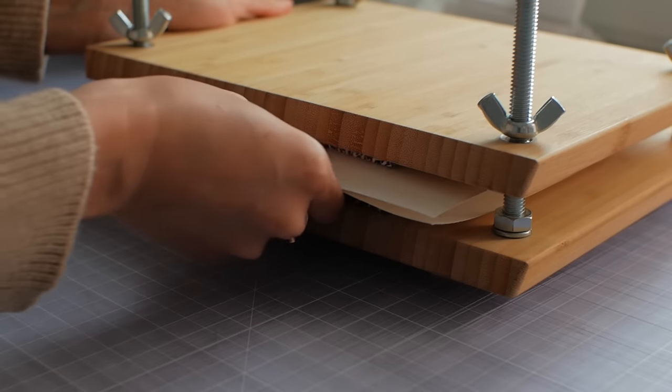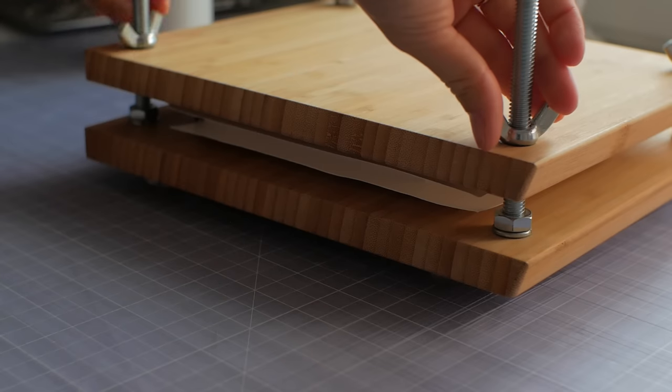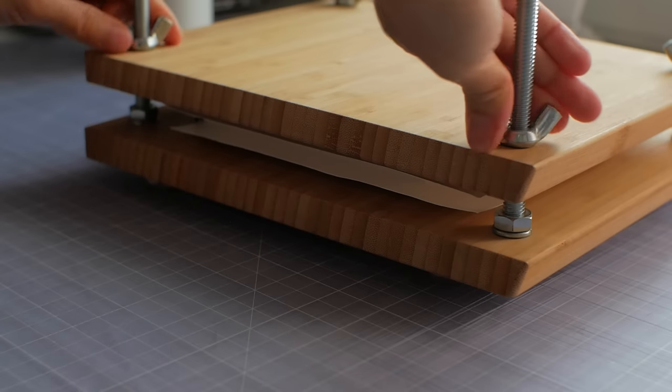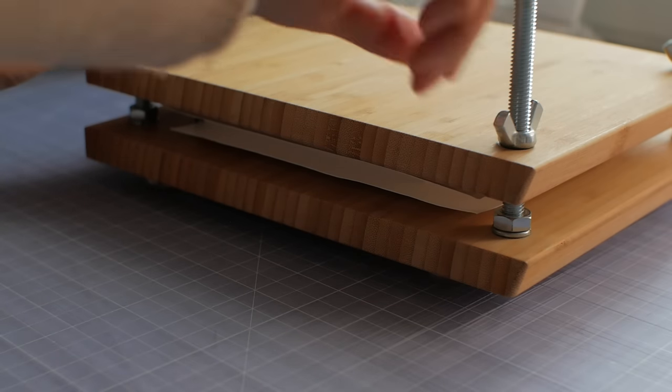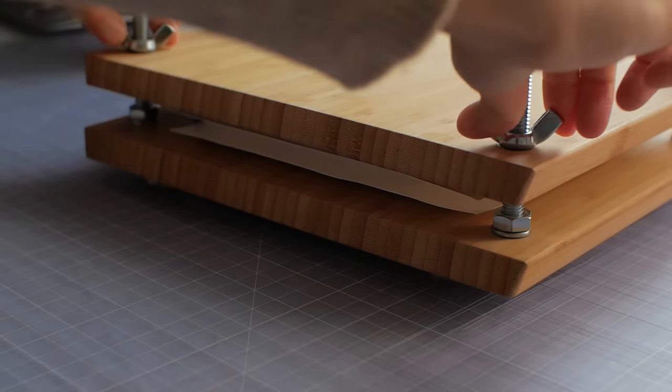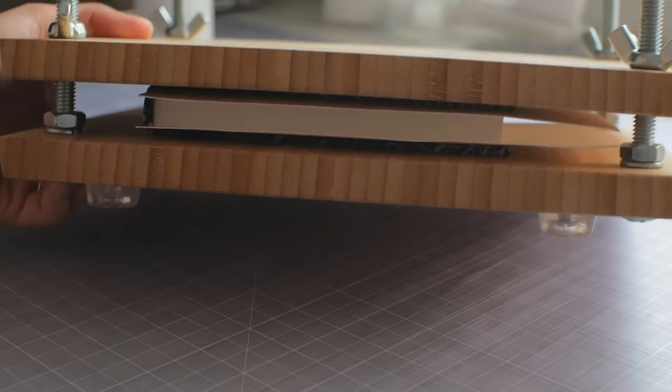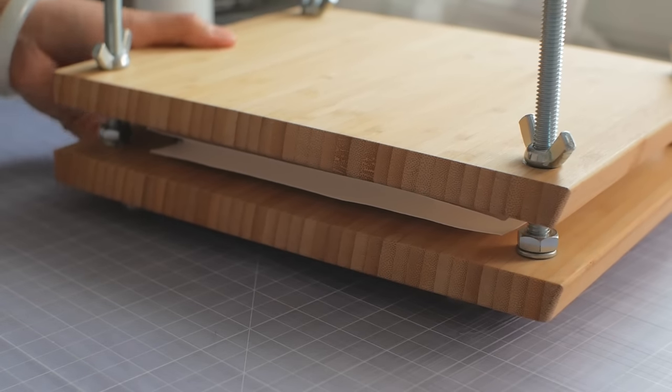The book is pressed overnight. Pressing books after they're completed helps prevent paper from warping and wrinkling while the glue dries. It's also a chance for all your materials to snuggle together. You can also weigh down your book with heavy objects.